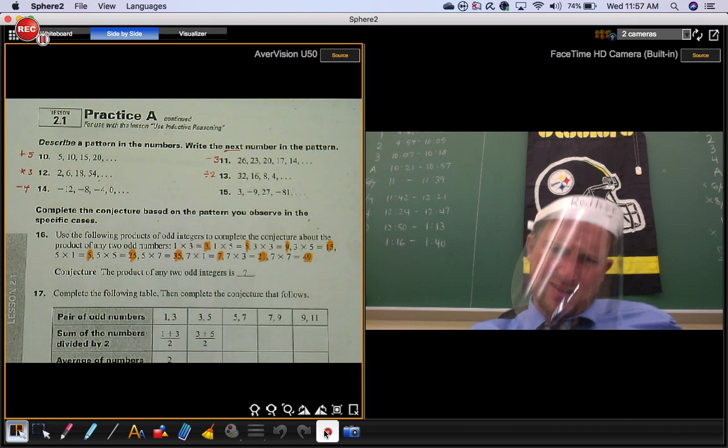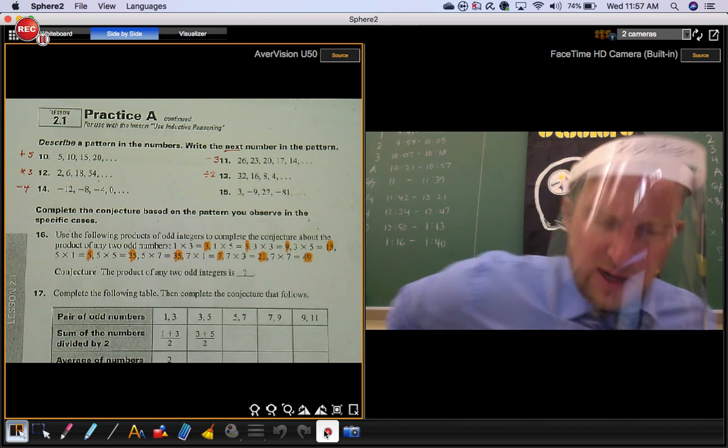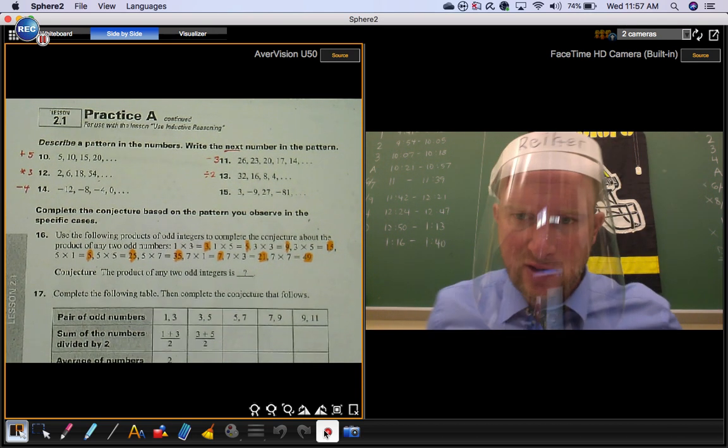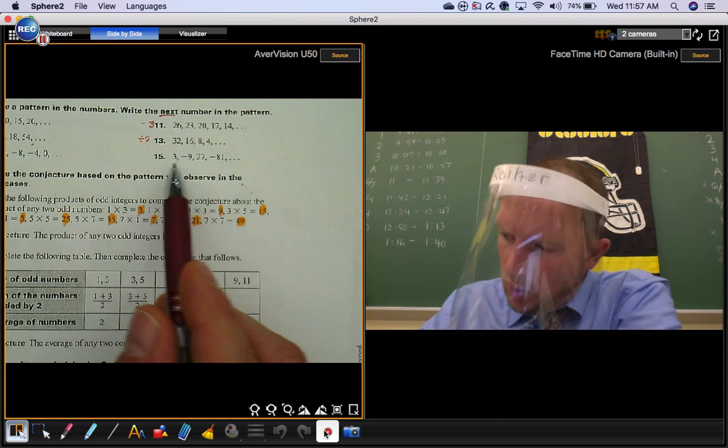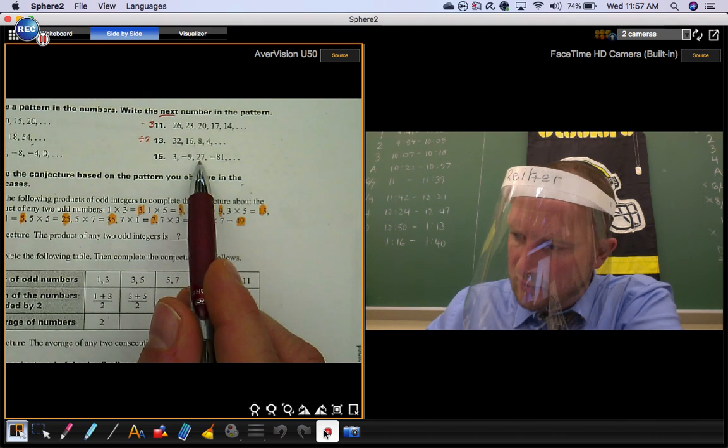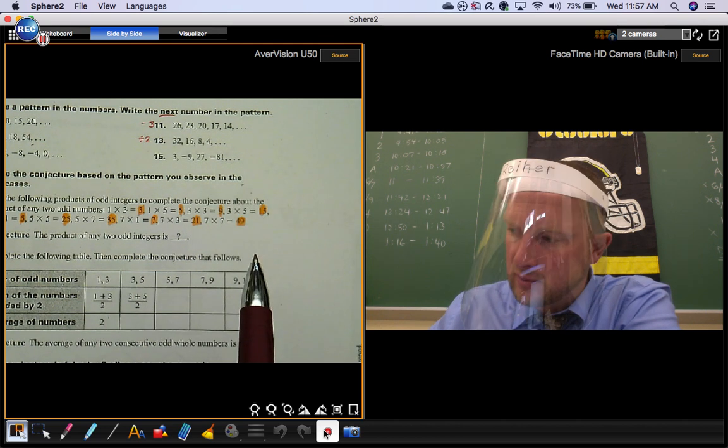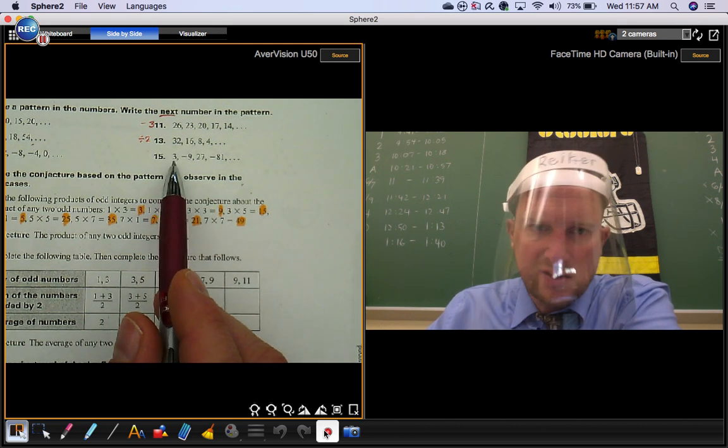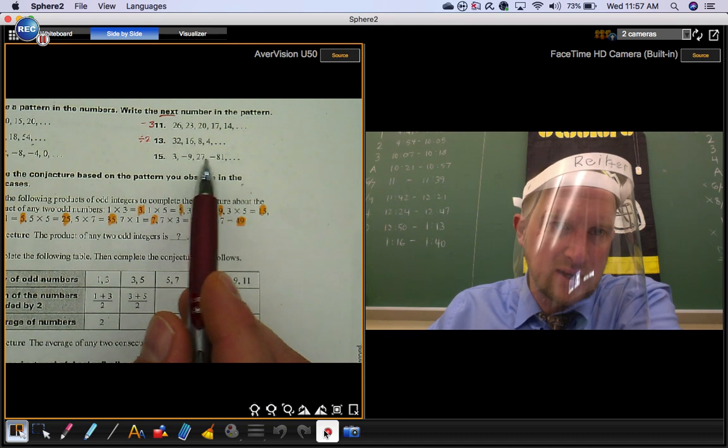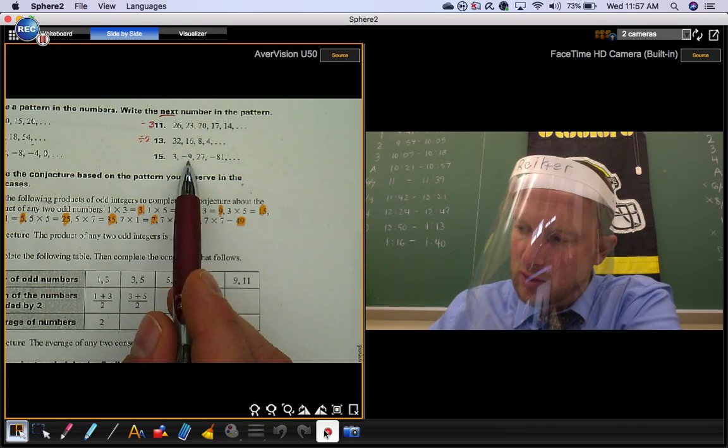Number 15 is not that difficult either, but you might have trouble putting into words what you're going to do to get the next term. We're alternating from positive to negative, positive to negative. So you know your next term is going to be positive. If you just discount the positives and the negatives for a second, it looks like you're multiplying by three.